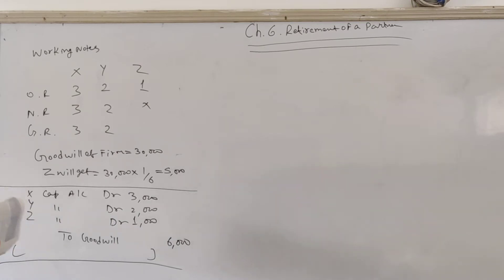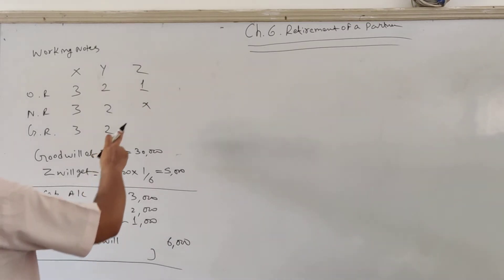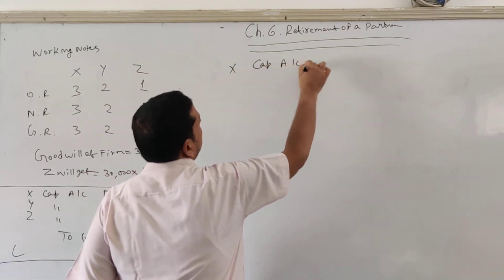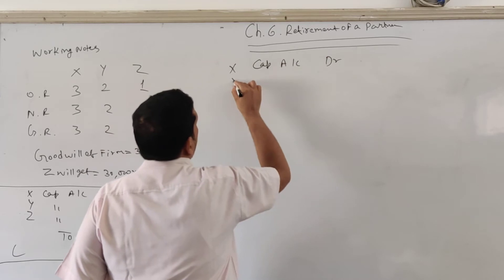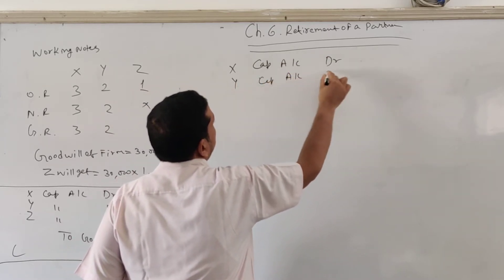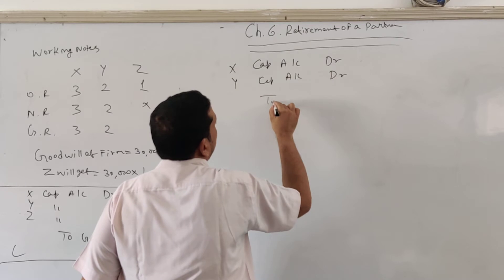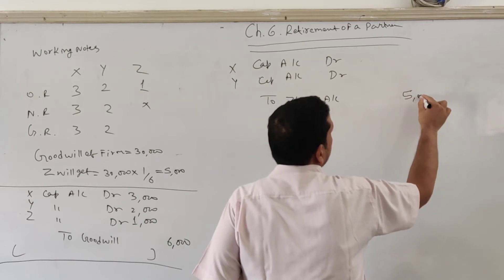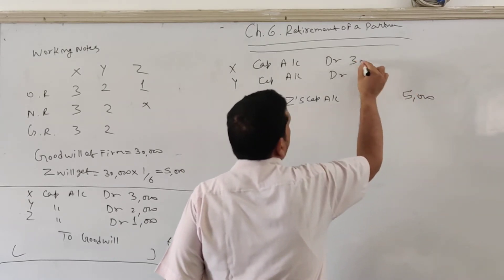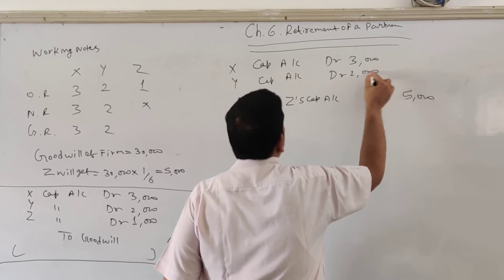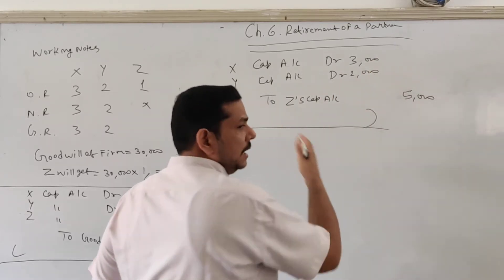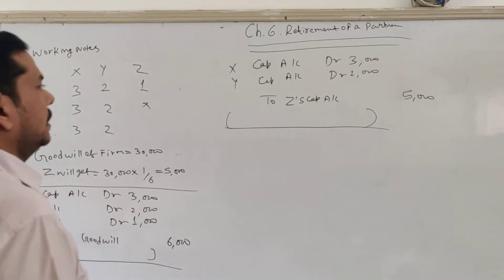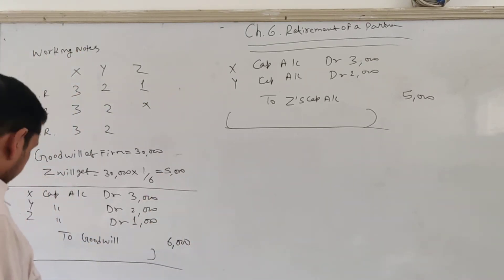Now we will pass the entry for the share amount credited to Z. Debit X capital account and debit Y capital account, credit Z capital account. The amount credited to Z by way of goodwill is 5,000, shared between X and Y in ratio 3:2. You will write the narration: being the share of goodwill given to the retiring partner. In this way, the working notes are over.